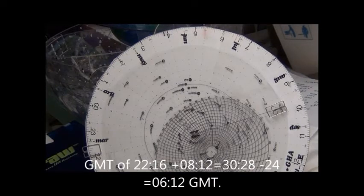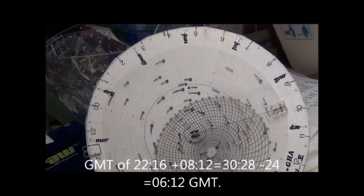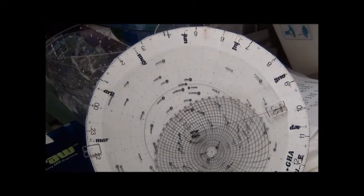So now what we want to do is decide when we want to go out and observe stars. We have decided that we will go out at 0, 8, 12. So we add the two together, 22, 16 and 0, 8, 12. This gives us 30 degrees and 28 minutes.